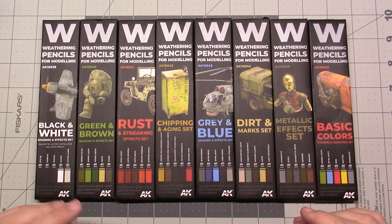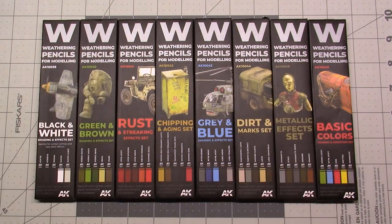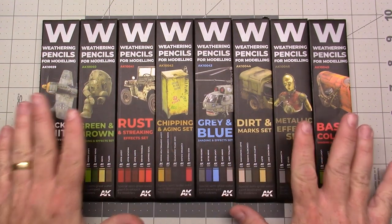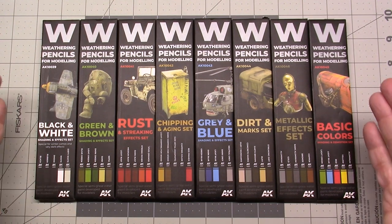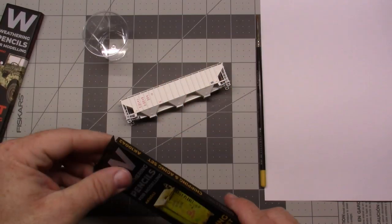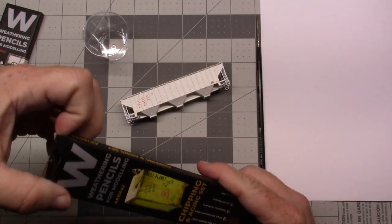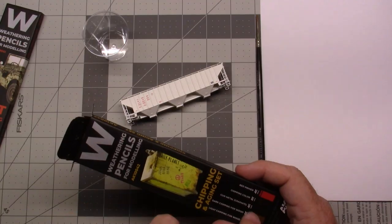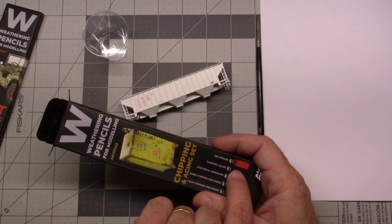So AK Interactive's weathering pencils are genuinely a new product that is dedicated to the art of aging, dirtying, rusting, and otherwise giving models a distressed look. And while the closest comparison that I can make with them is that they are a type of watercolor pencil, even then that's not entirely accurate. What they do have in common is that they are pencils with a water-soluble core. However, watercolor pencils are designed to be used on specifically designed paper that has both a rough and an absorbent texture. Weathering pencils are intended to be applied over harder, less absorbent materials. Normally this would be applied on plastic models, but I suspect that they would be good for wood textures as well.